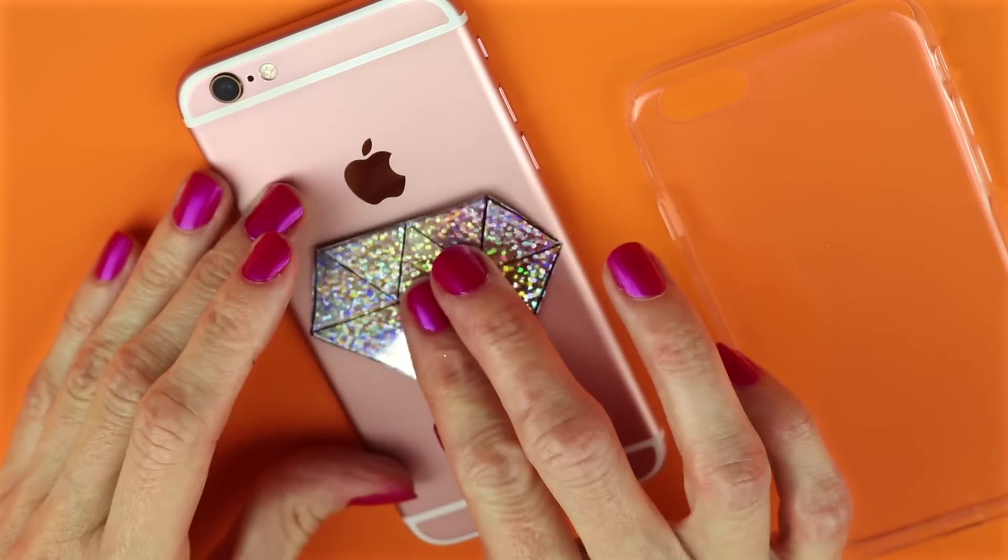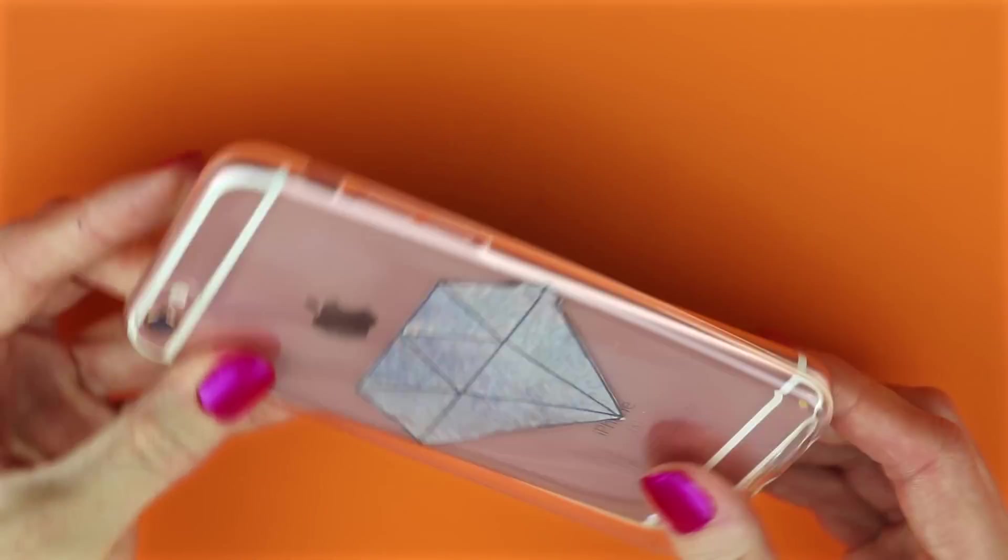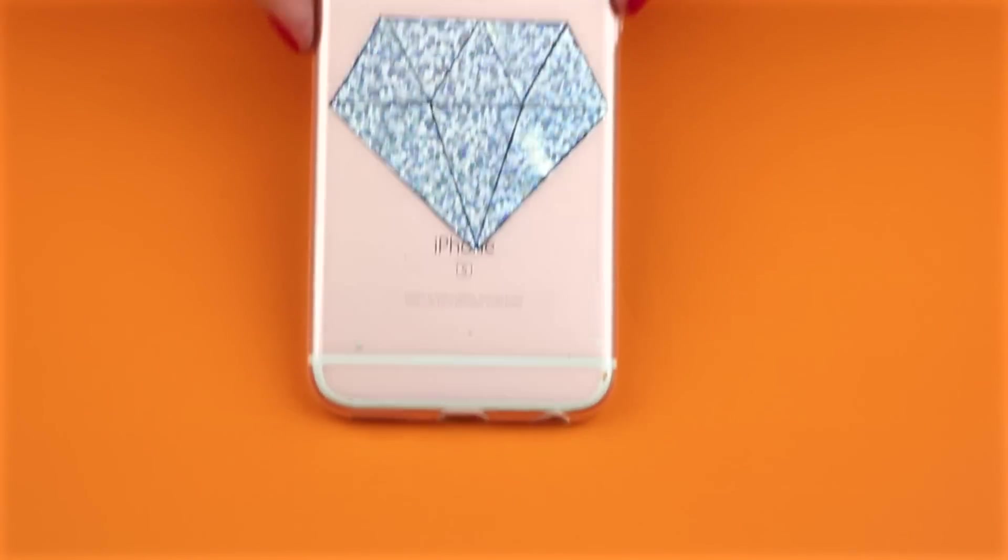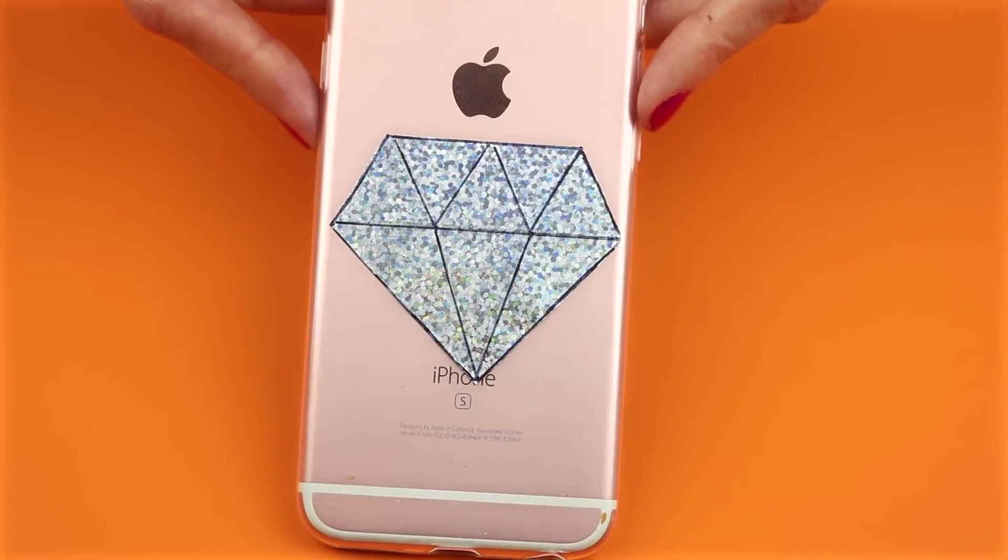Then I used a clear phone case to cover it. And that's all there is to this easy DIY phone case that is a hollow diamond.